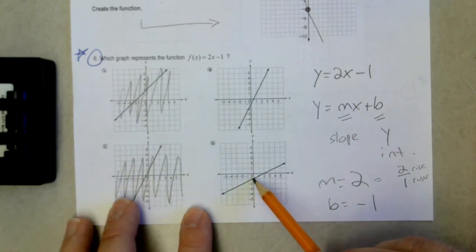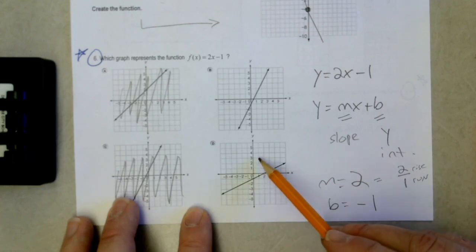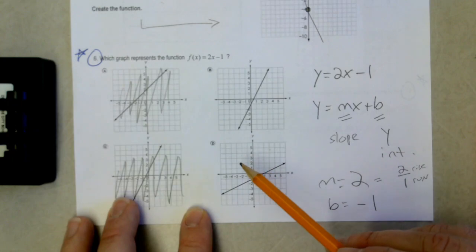If I look at d from that point, negative 1, which is my starting point, am I going up 2 over 1, up 2 over 1, up 2 over 1? No, that is not a slope of 2 line. So just by process of elimination, we know our final answer is b.